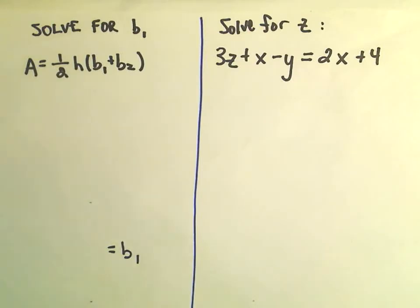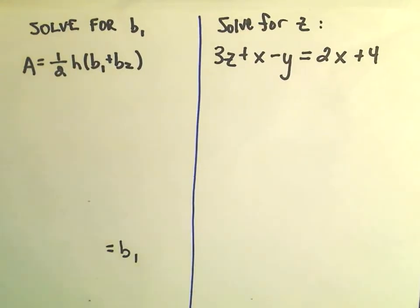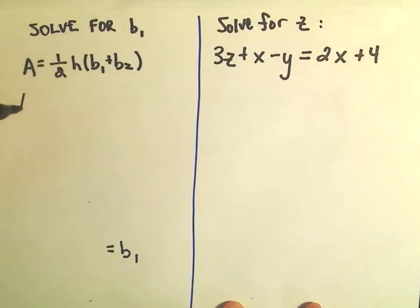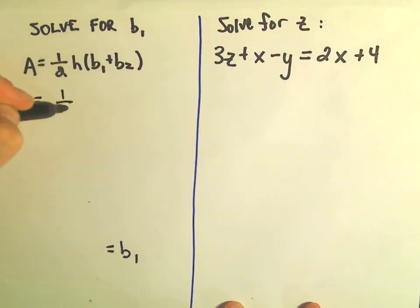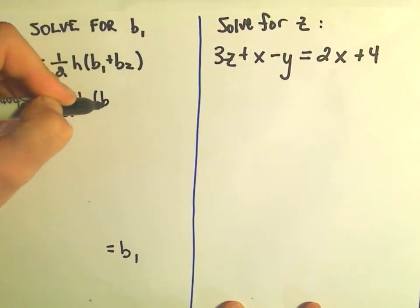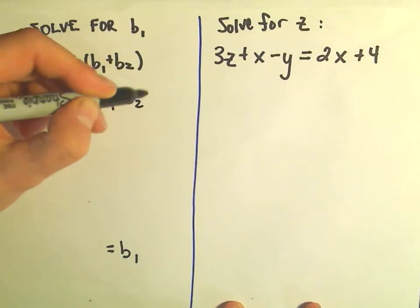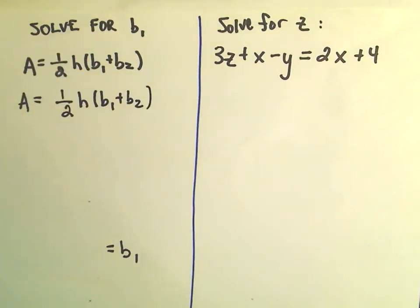So multiplying by one-half to me is the same thing as dividing by two. So I think, if you're dividing by two, what undoes division? Well, multiplication undoes division.